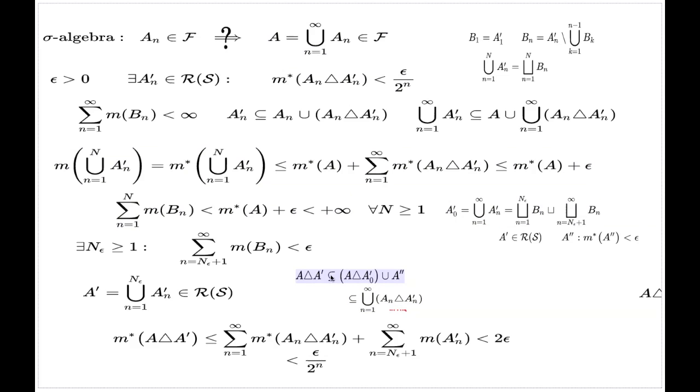Now we can do the same estimate. The external measure of this thing is controlled by the external measure of this bracket, which is less than the external measure of these individual differences, plus the external measure of this piece, which is the tail of the series of measures of b_n's, and altogether this is less than 2 epsilon.